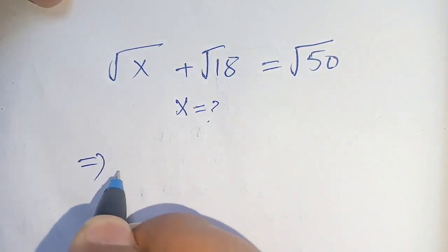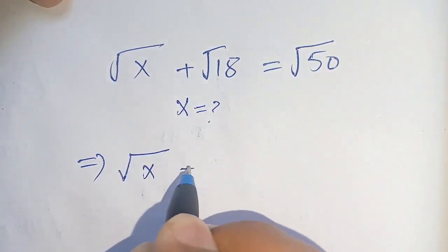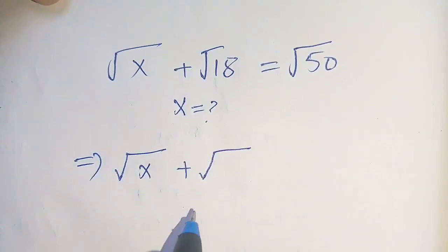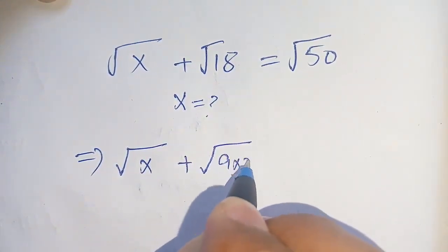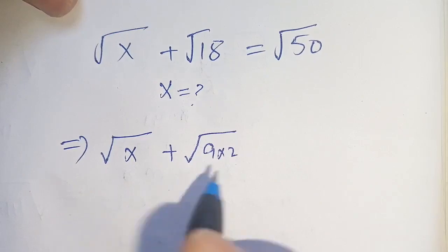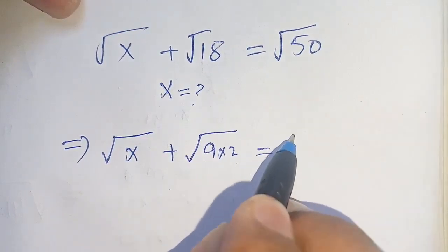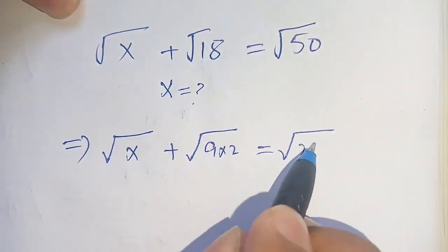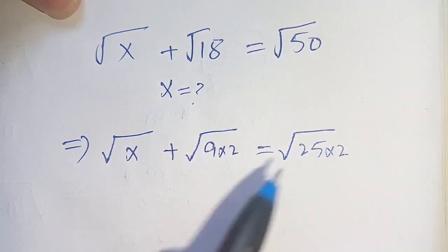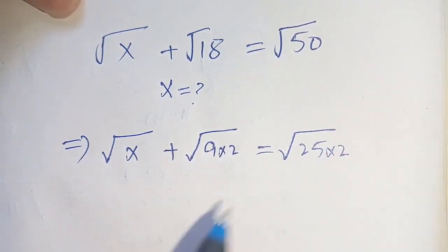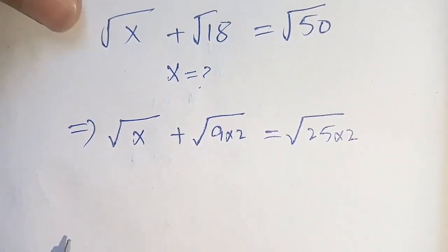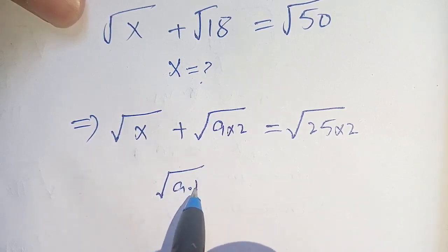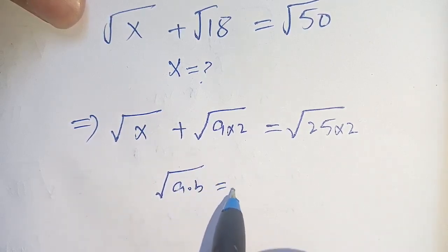We can write square root of 18 as square root of 9 times 2, since 9 times 2 equals 18. And square root of 50 can be written as square root of 25 times 2, since 25 times 2 equals 50.